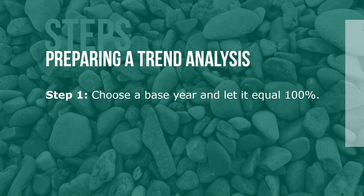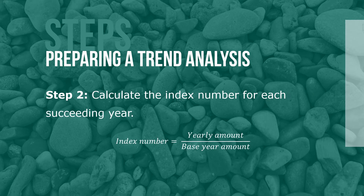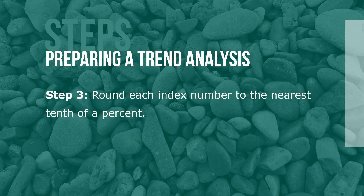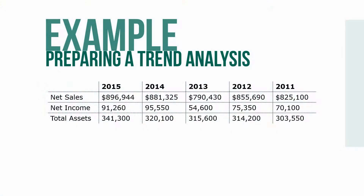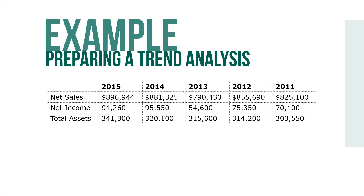Here are the steps in preparing a trend analysis. Step one: choose a base year and let it equal 100%. Step two: calculate the index number for each succeeding year, where index number equals yearly amount over the base year amount. Step three: round each index number to the nearest tenth of a percent. From the following data, prepare a five-year trend analysis of net sales, net income, and total assets.